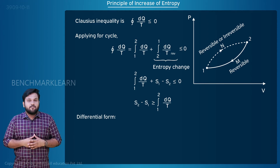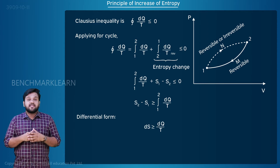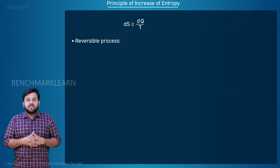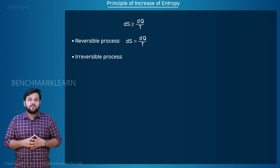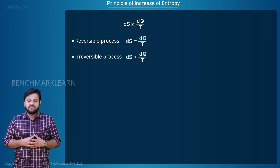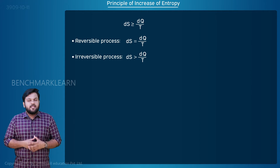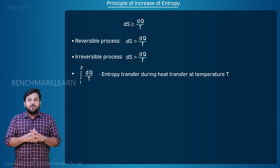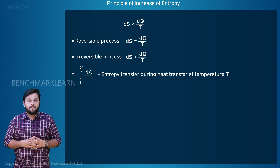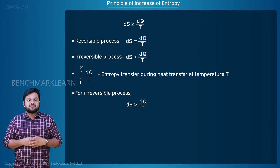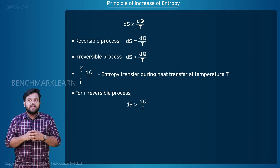In differential form, ds is greater than or equal to dq by T. For a reversible process, ds equals dq by T, and for an irreversible process, ds is greater than dq by T. The quantity integral from 1 to 2 of dq by T is the entropy transfer involved when heat is transferred at temperature T. For an irreversible process, ds is greater than dq by T.